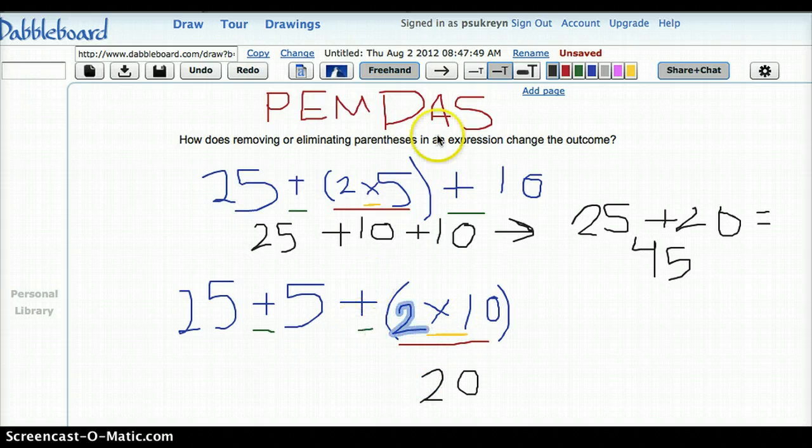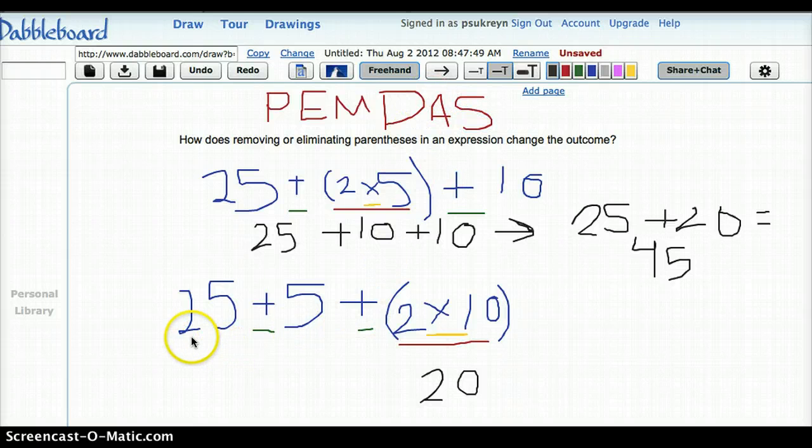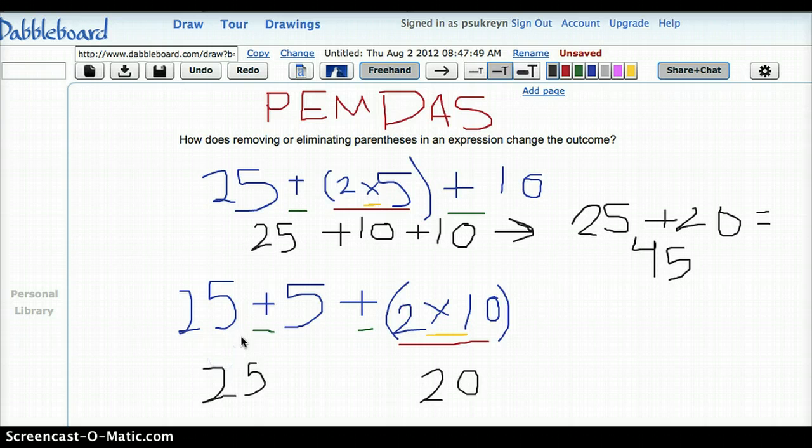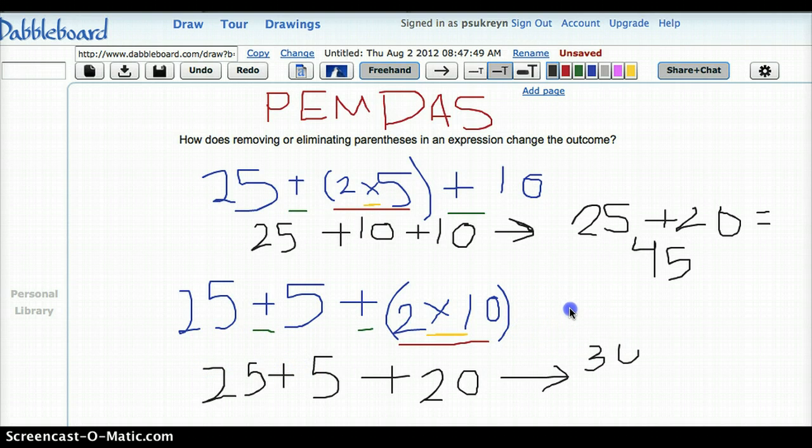Okay, then I'm going to do my addition and subtraction. We've got no subtraction, so let's add 25 plus 5 plus 20. Okay, 25 and 5 is 30 plus 20. And I have a sum of 50.